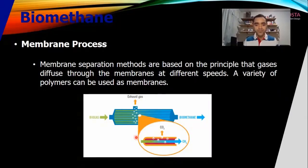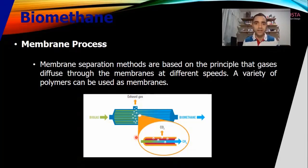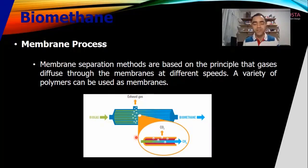We start with the membrane. What happens in the membrane is that the method of separation principle is the diffusion of the gas through a polymer that is used as a filter. Based on the different size of the molecules related to methane and CO2, the membrane is able to let the CO2 pass through, while the methane stays inside, and with that we purify the gas with the membrane.